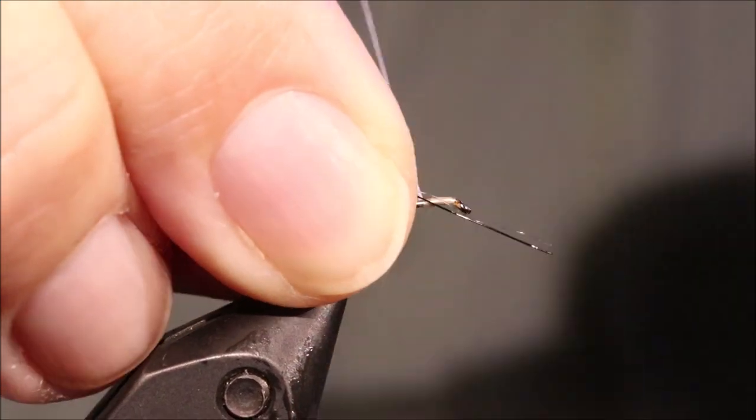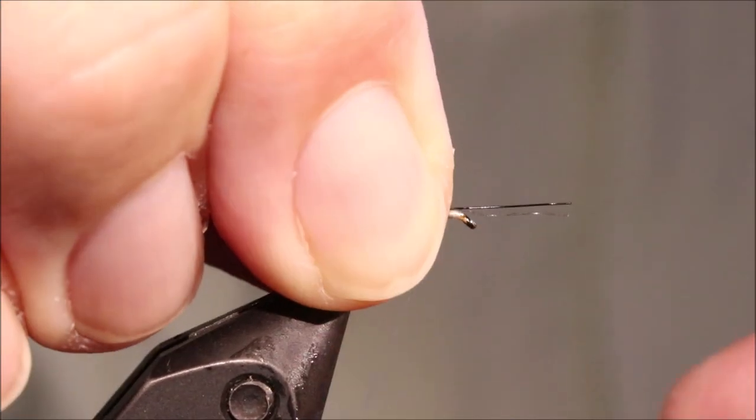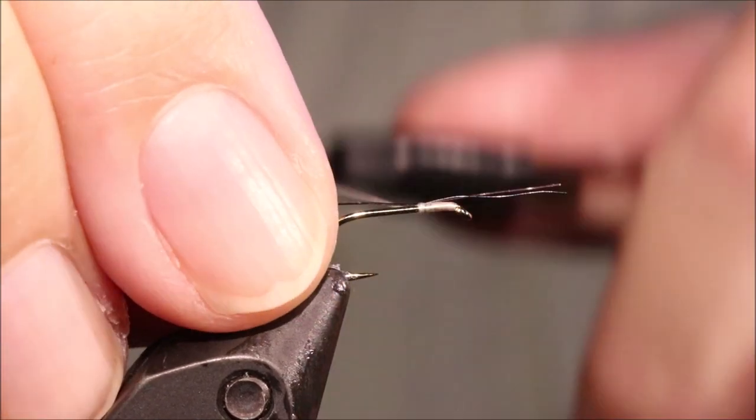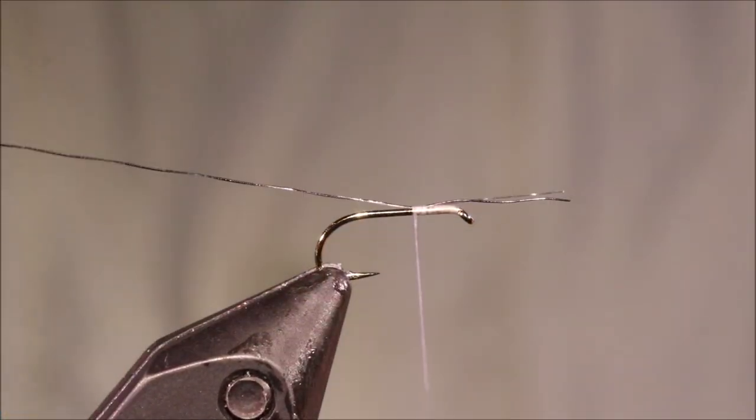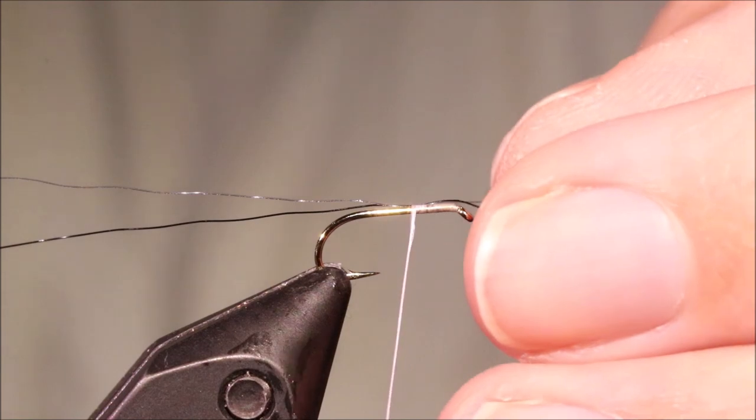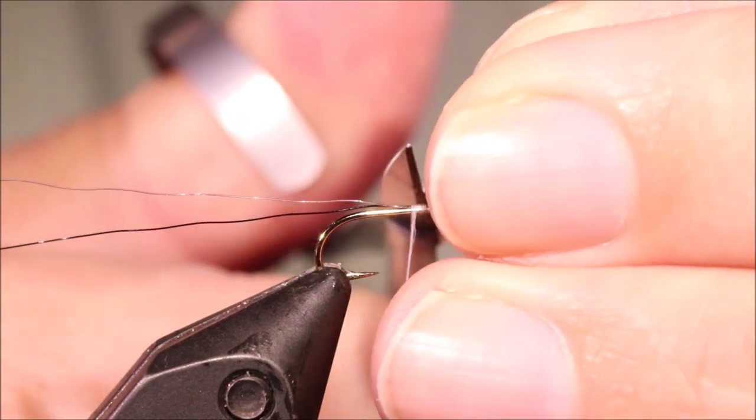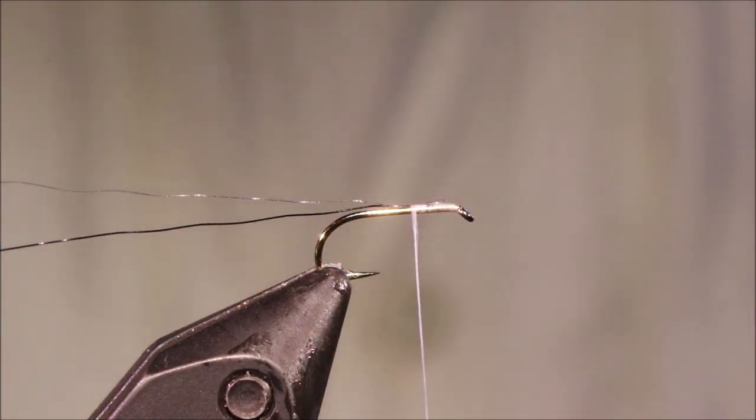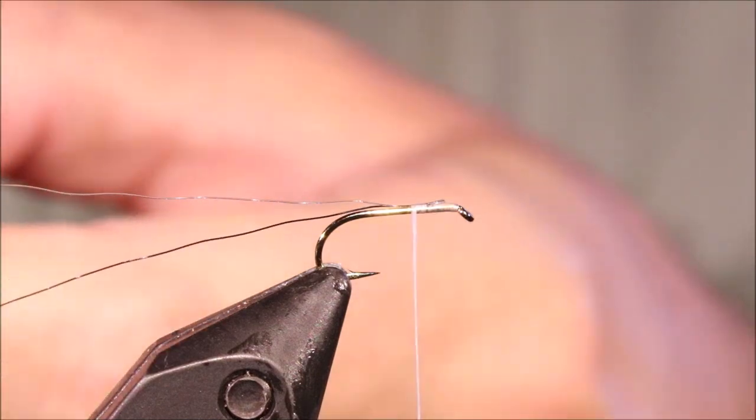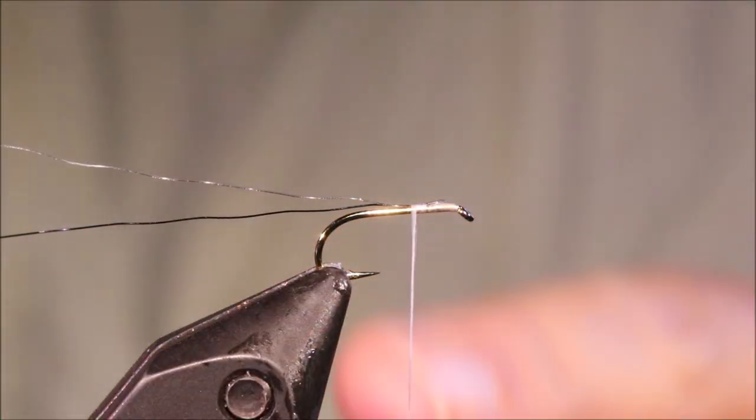So I've started some white thread, this is Vivas 10-0, normally I'd use uni but I've run out of white uni. And I've just tied in one length of black and one length of white super hair.